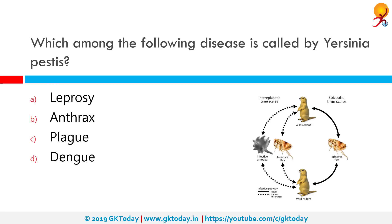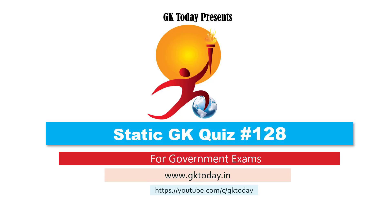The disease known as Yersinia pestis is the Black Death. Yersinia pestis, formerly known as Pasteurella pestis, is a gram-negative, non-motile, rod-shaped coccobacillus with no spores. It is a facultative anaerobic organism that can infect humans via the oriental rat flea. It causes the disease plague, which takes three main forms: pneumonic, septicemic, and bubonic. That's all for today's quiz — until the next video, goodbye.